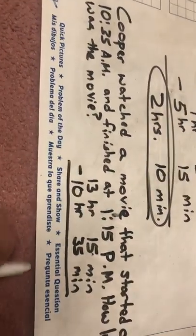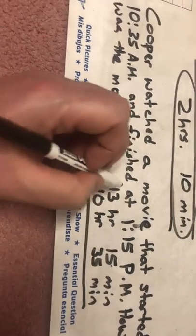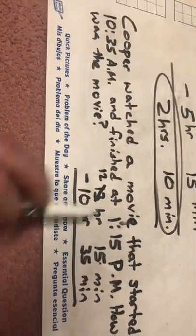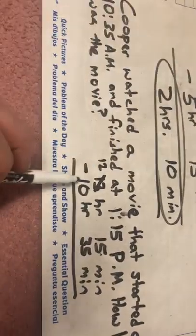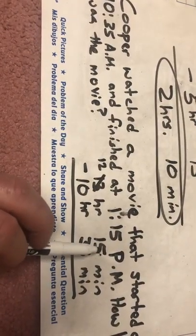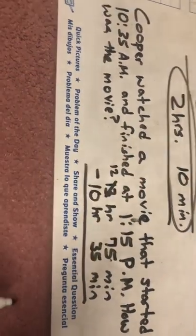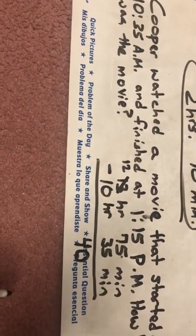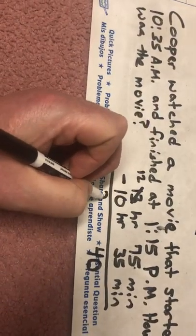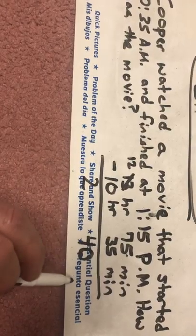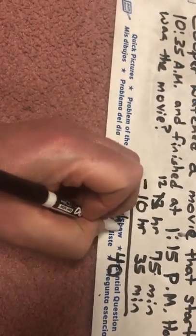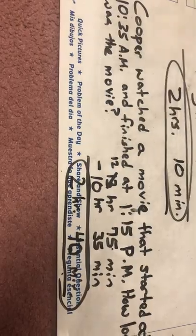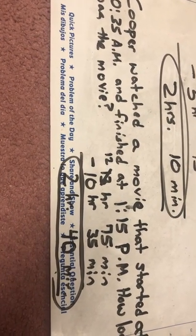I do 13 hours and 15 minutes minus 10 hours and 35 minutes. I can't do 15 minus 35, so I borrow from 13 to make it 12, and add 60 to the 15, giving me 75. 75 minus 35 is 40, and 12 minus 10 is 2. The movie was 2 hours and 40 minutes long. I'll be available to help with this assignment in class — talk to you later, bye.